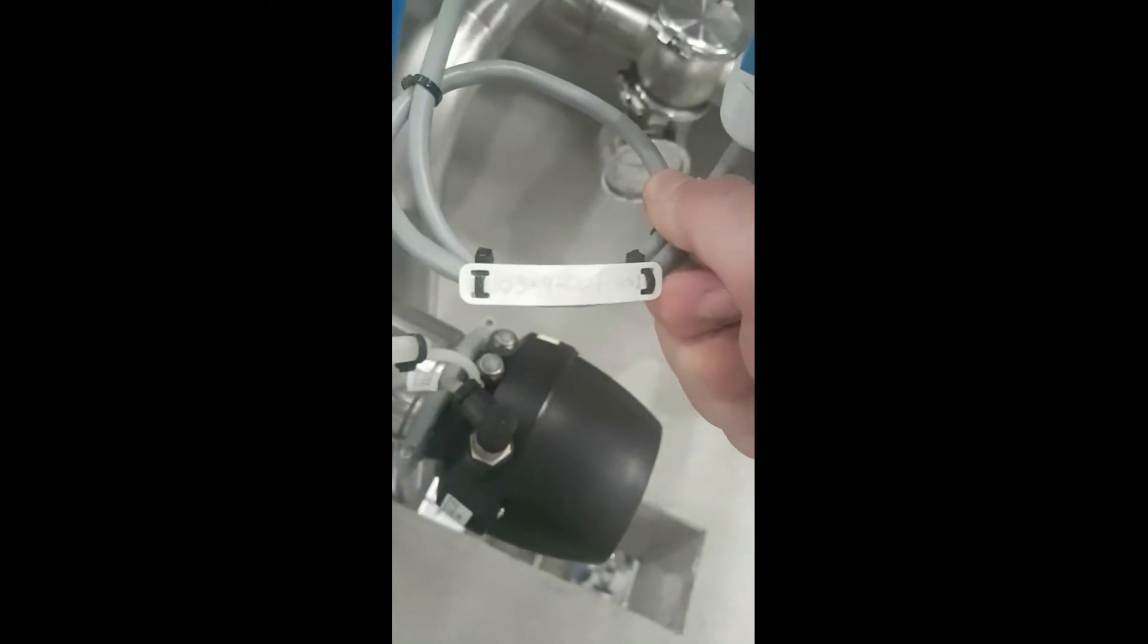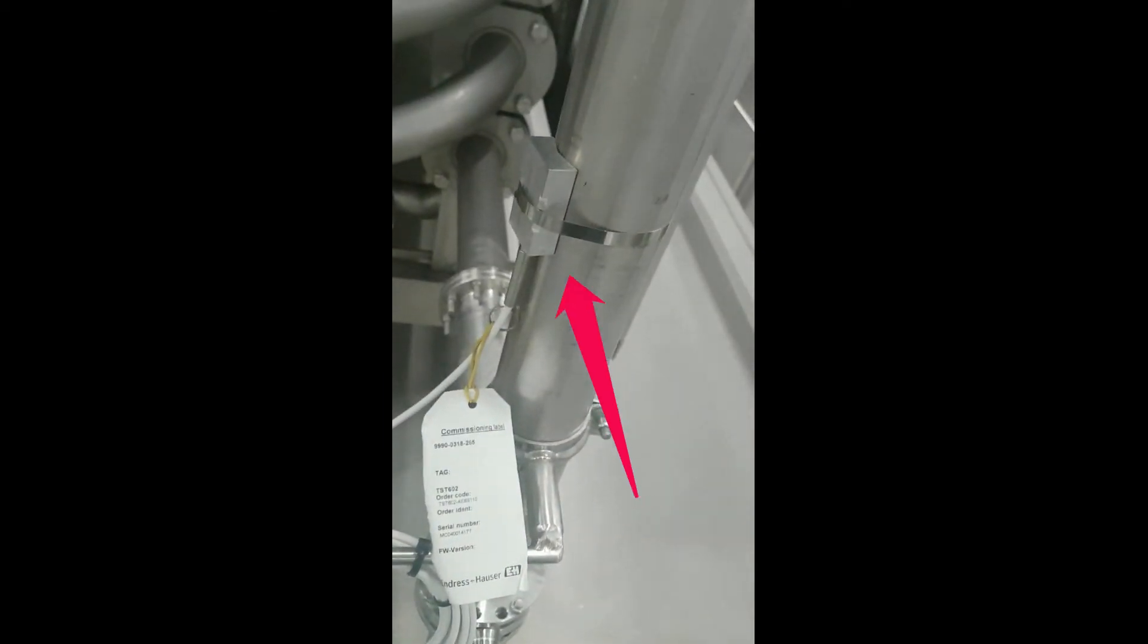Strapped to the pipe in the process is a surface thermometer TST602 as shown by the arrow and also circled.